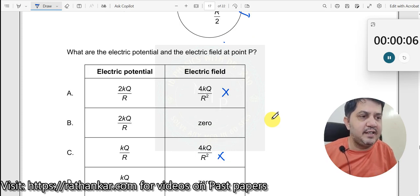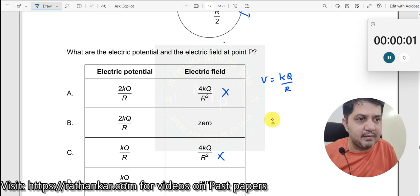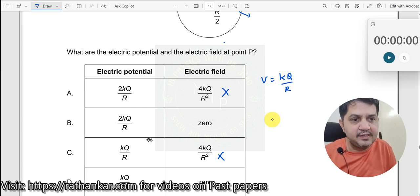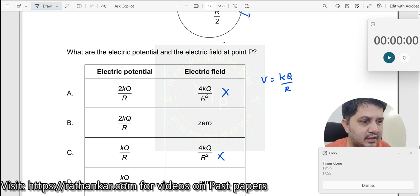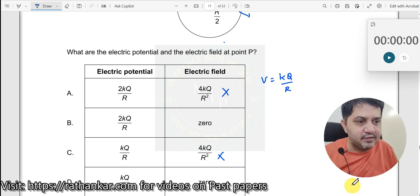Electric potential inside a solid sphere is always given by V = KQ/R, which is a constant. Thus, the answer should be D.